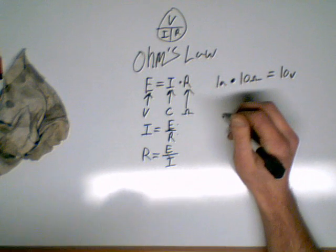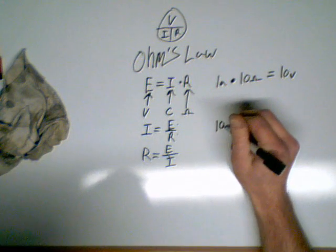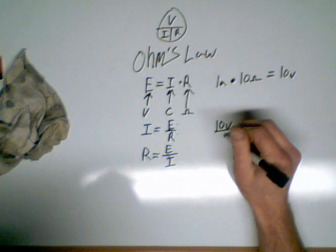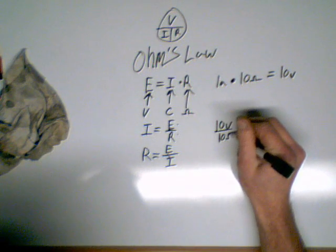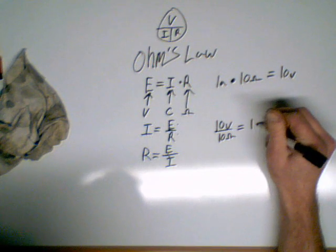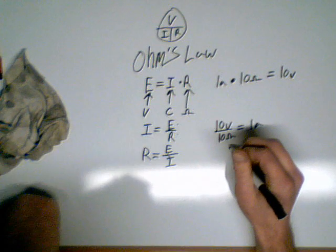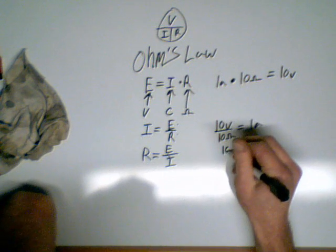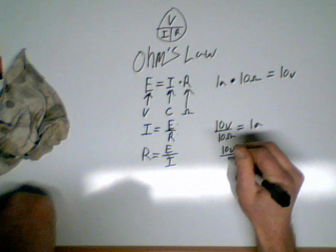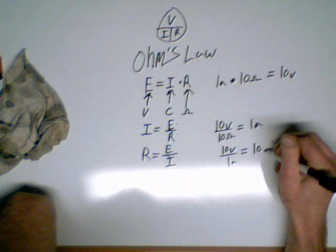Now let's say you don't know the amperage, but you know you've got 10 volts, and you've got 10 ohms. Well, 10 divided by 10 is 1 amp. Now you don't know the resistance, but you know the voltage and the amperage. The voltage is 10 volts, your amperage is 1 amp. That's going to equal 10 ohms.